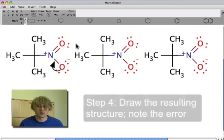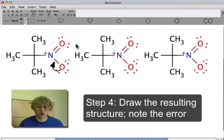And that is it. Step four, after you've drawn your arrow, is to draw the resulting Lewis structure from that arrow being drawn. So you can draw that on Marvin Sketch as such.